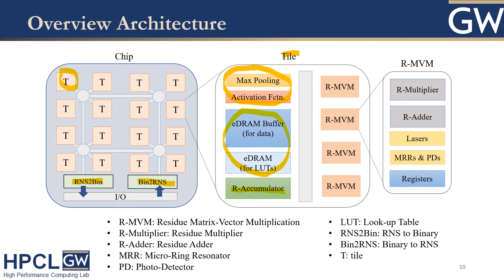That is why we need the R accumulator. Inside an RMVM, we have the R multiplier and the R adder, which perform the MAC operations. We also have light lasers to provide the light, micro-ring resonators and photodetectors as filters, and finally registers to store the results.